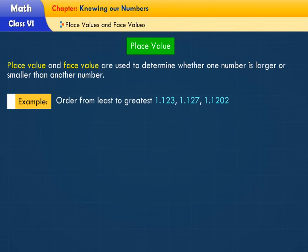For example, order from least to greatest: 1.123, 1.127, 1.1202.